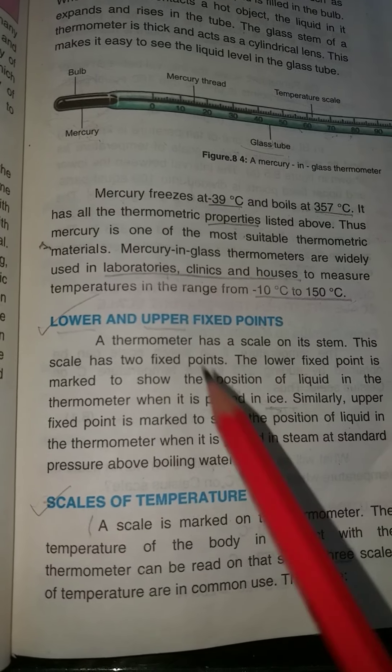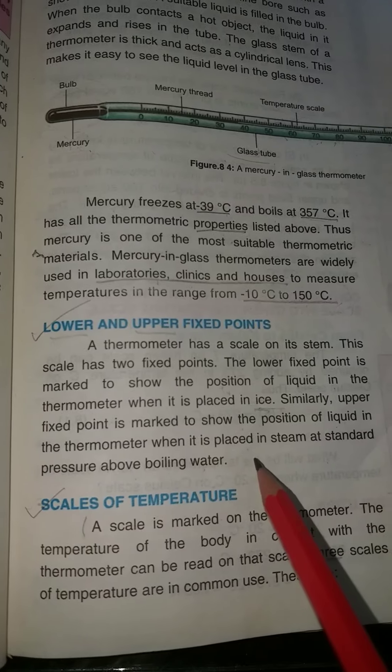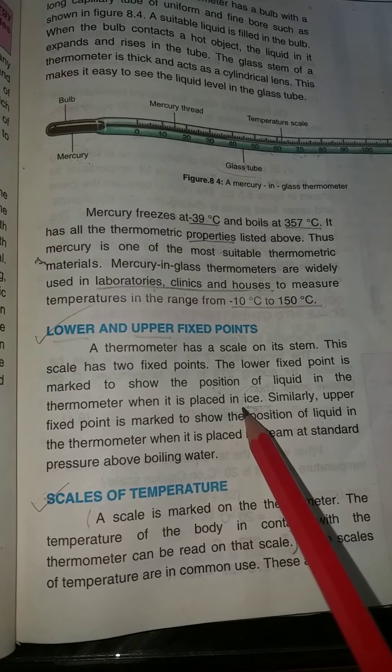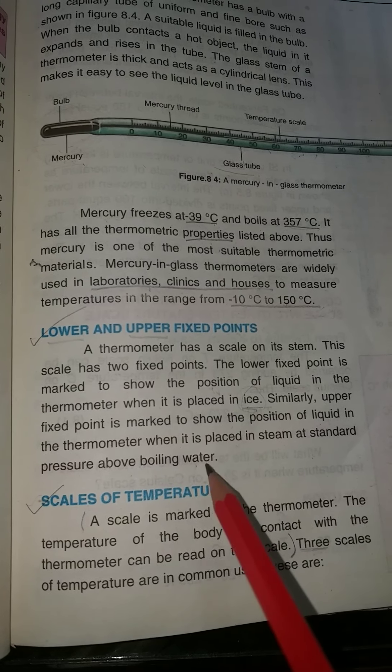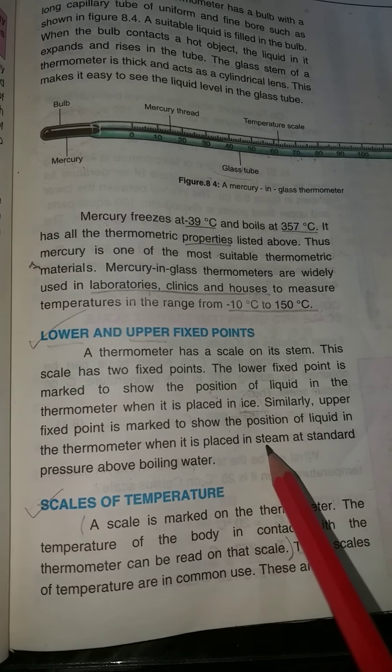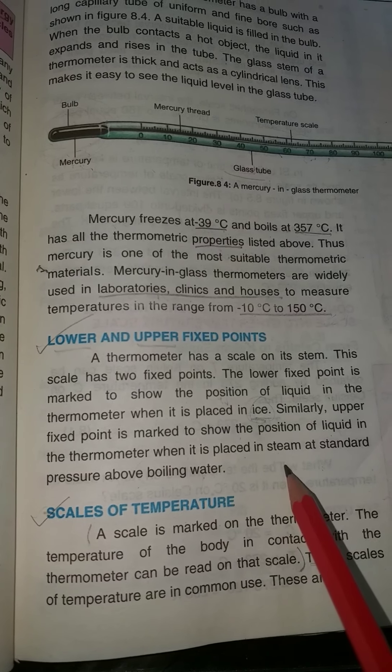The higher fixed point is rising. If it moves to higher fixed points... If we keep the thermometer in ice, then it shows the lower fixed point. If we keep it in boiling water or hot things, the temperature will move to the upper fixed point.